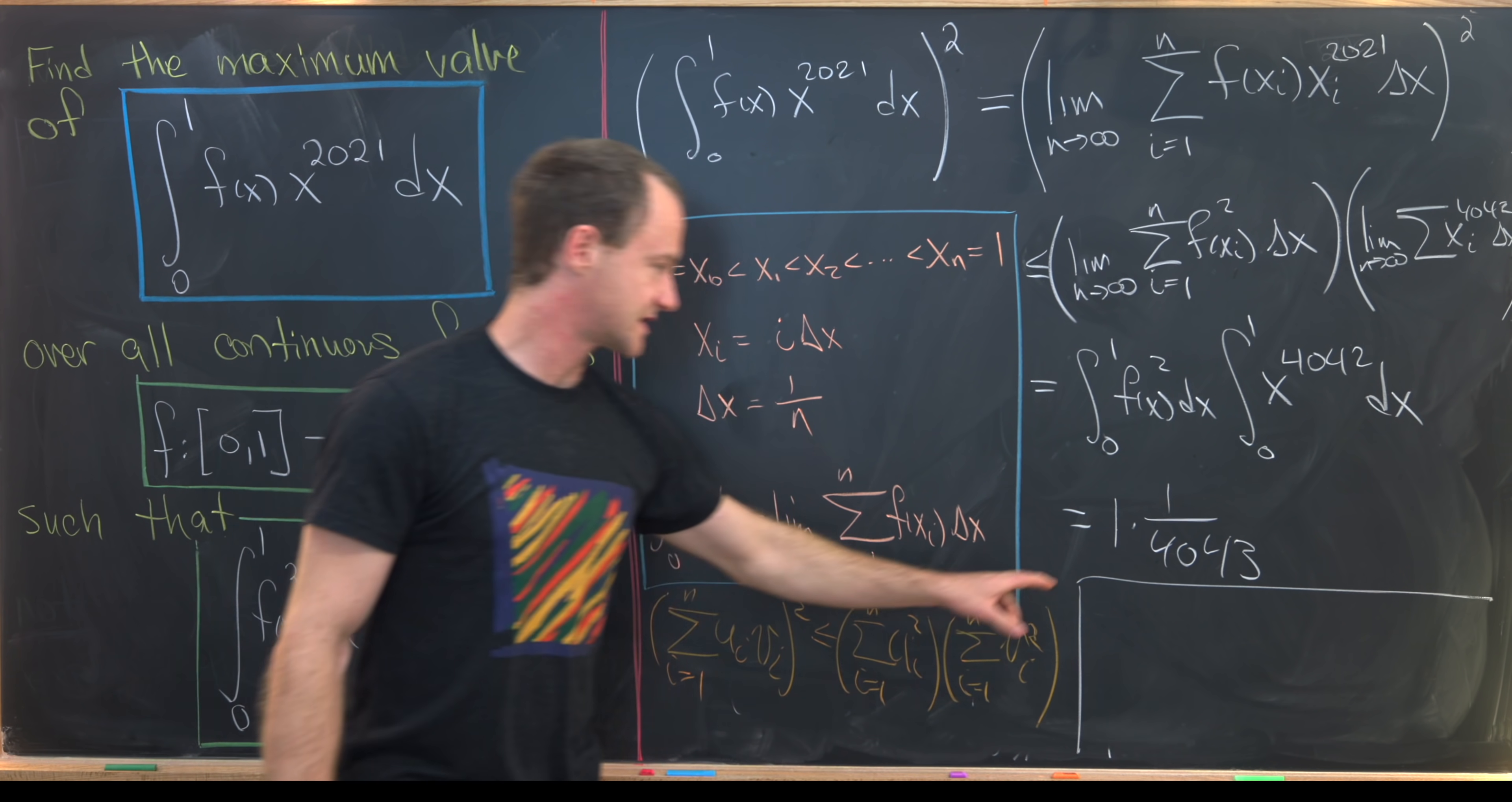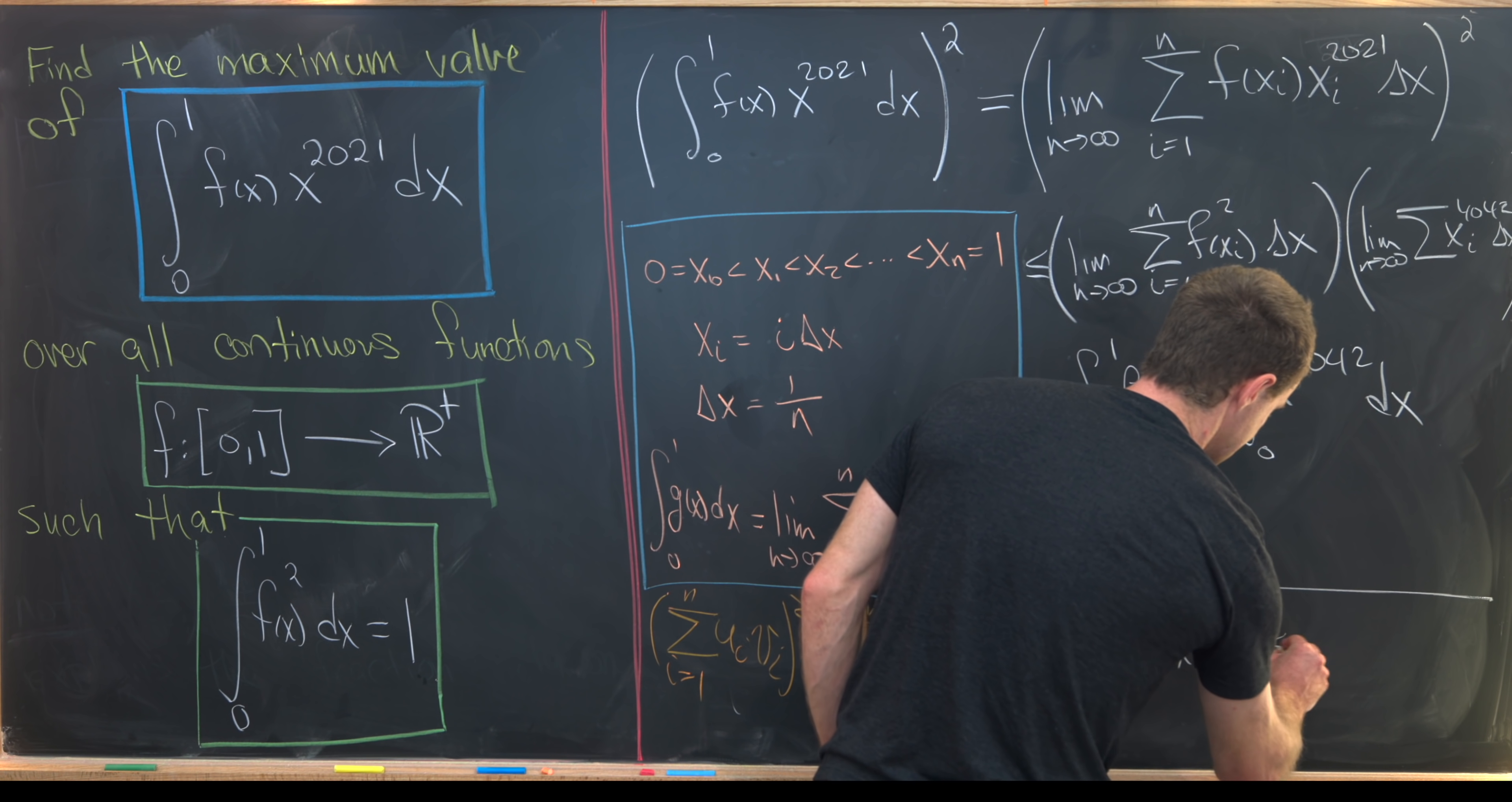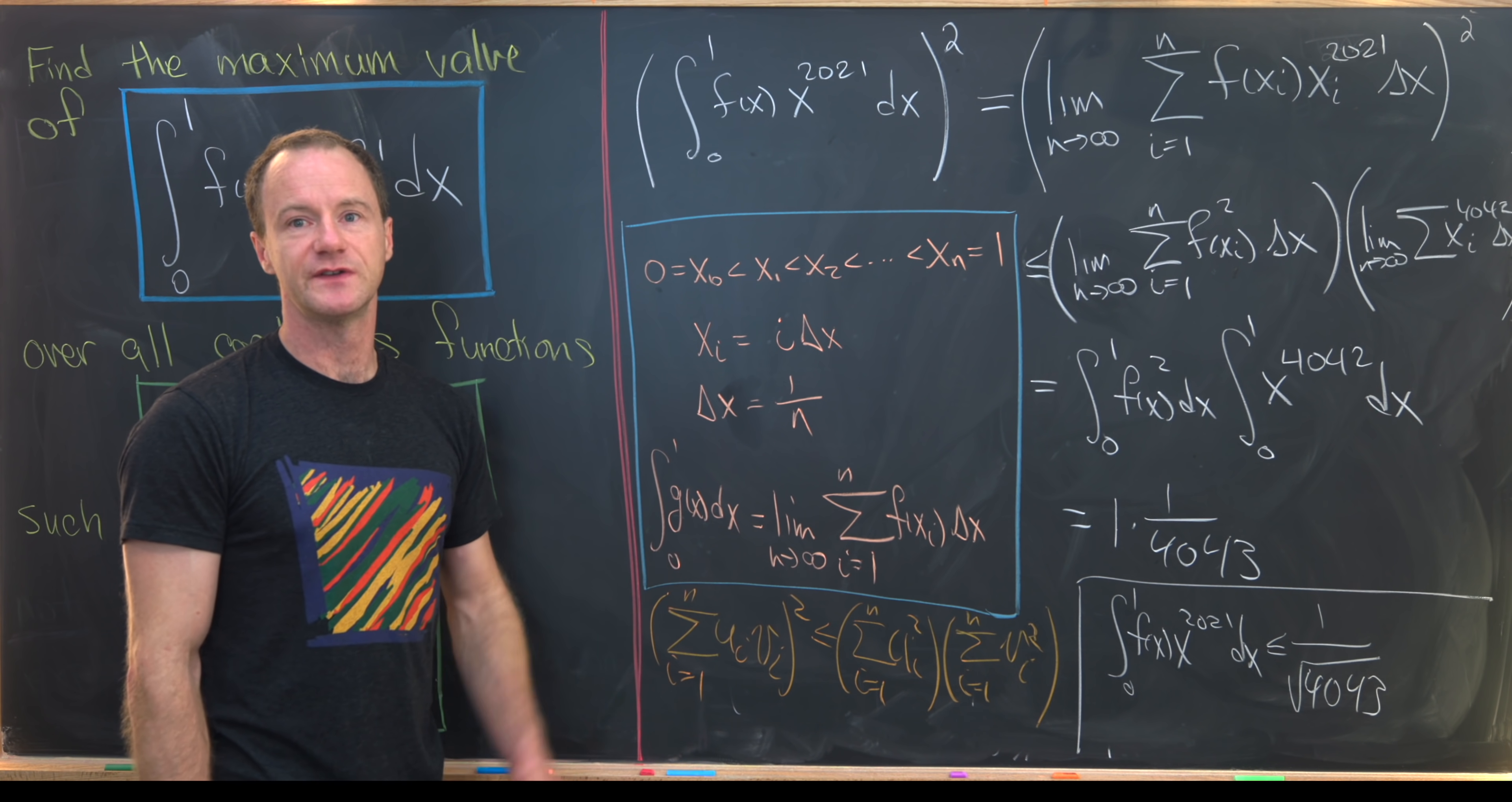Putting all of this together, we see that the square of our goal object is less than or equal to 1 over 4043. But that means our goal object, which is the integral of f(x) times x to the 2021 dx, is less than or equal to 1 over the square root of 4043. So now we found an upper bound for our goal object, and what's left to show is that we can achieve this upper bound.